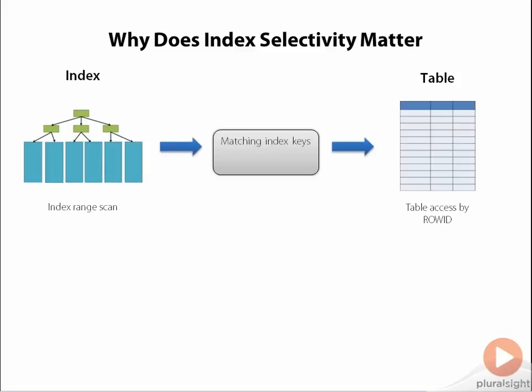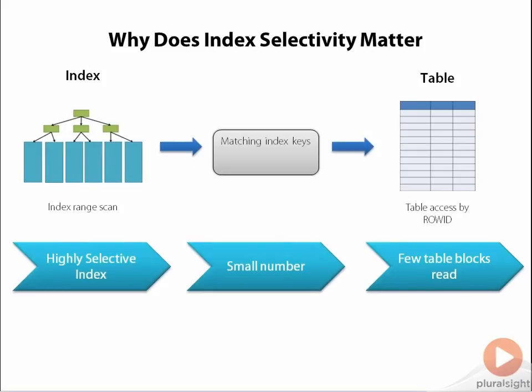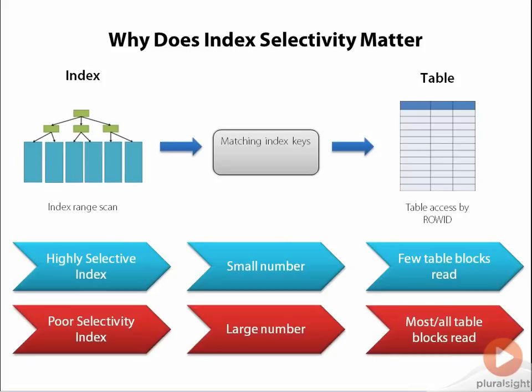So why is index selectivity so important? We'll visualize the process of using an index in a SQL statement to understand this. When Oracle uses an index in a SQL statement, it reads all of the matching entries from the index, and then uses the row IDs in those entries to know what rows from the table it needs to read. In a selective index, there are only a few matching entries, and therefore Oracle only has to read a few blocks from the table to get the actual data it needs. But if the index has poor selectivity, we'll have a lot of entries returned from the first step, and a lot of entries means a lot more rows to read from the table. Since these rows are distributed relatively randomly in the table, we may end up reading most or all of the table. So we've had to pay the cost of reading the index and then the cost of reading most or all the table anyway, which is actually less efficient than if we had just read the entire table in the first place.